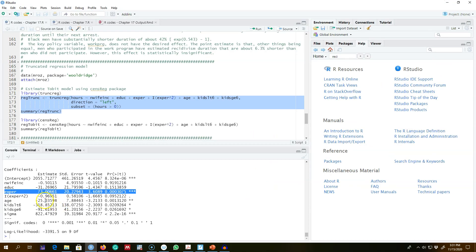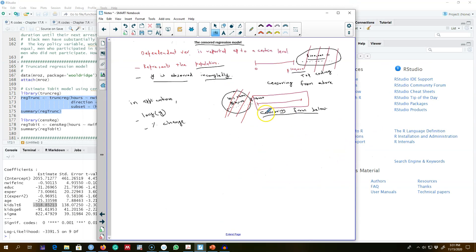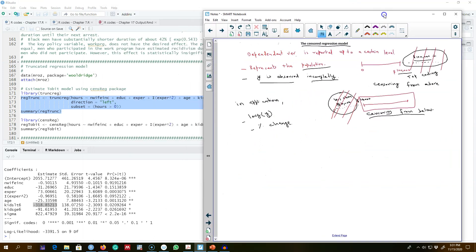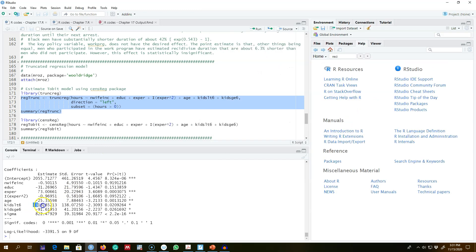Whenever you interpret these coefficients, you specifically say that this applies only to this part of the population. For example, in this case, you will interpret this as: an extra kid at home reduces working hours of a woman by 318 hours ceteris paribus